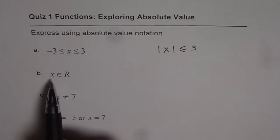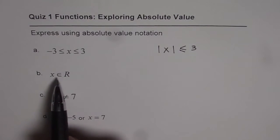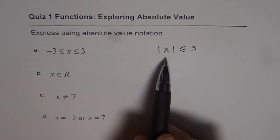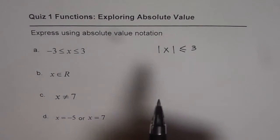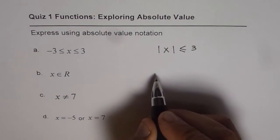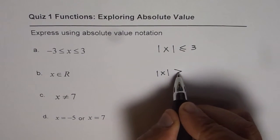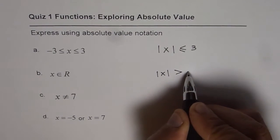Now, if we have x belongs to real number, it means what? It means that there is no restriction. So, x belongs to real number, we could write as an inequality also and that is absolute x is greater than, let's say, any negative number. For example, minus 1.